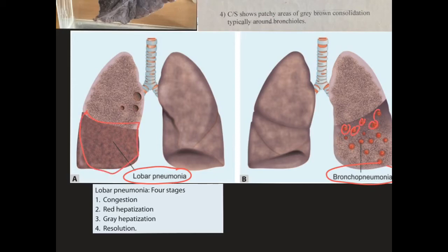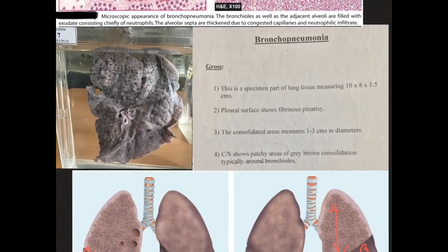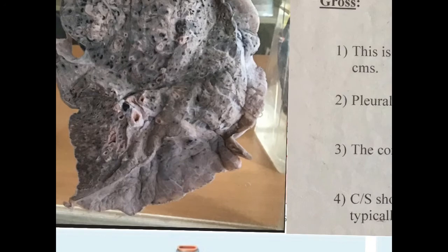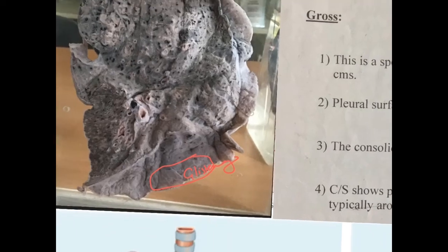The anatomical difference is clear: in lobar pneumonia, one entire lobe is involved, whereas in bronchopneumonia there is patchy involvement of one lobe or the full lung can be involved. Coming to the bronchopneumonia gross specimen, you can see a lung slice measuring around 10 × 8 × 1.5 cm. The pleural surface shows fibrinous pleurisy — the normal glistening translucency of the pleura is lost. Here you can see small bronchi and bronchioles with surrounding consolidation and airless spaces in a patchy distribution.